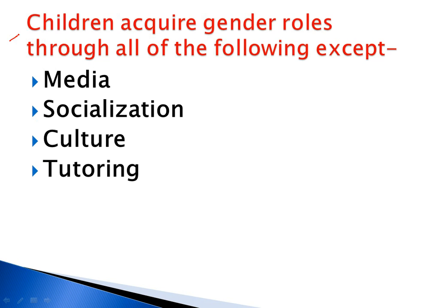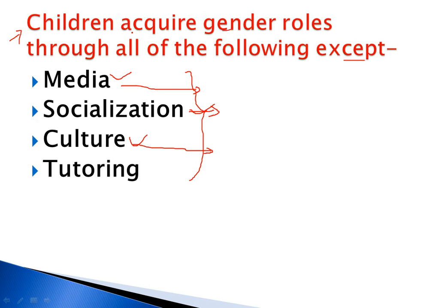The first question is: children acquire gender roles through all of the following except — you have four options. Three of them are ways children acquire gender roles, and one is not. Media, socialization, and culture are the three things by which children acquire gender roles. But in the case of tutoring or the teaching-learning process, a child will not acquire gender roles.